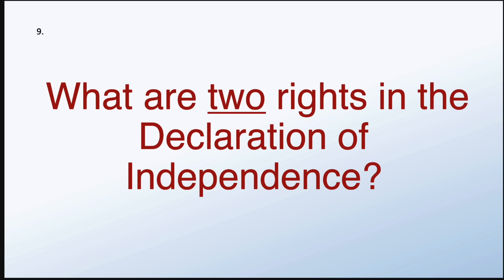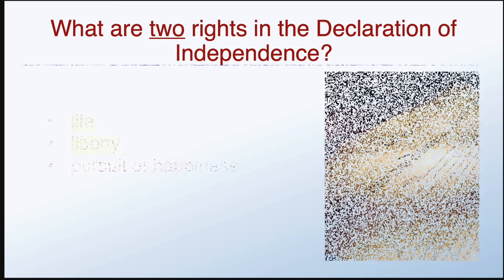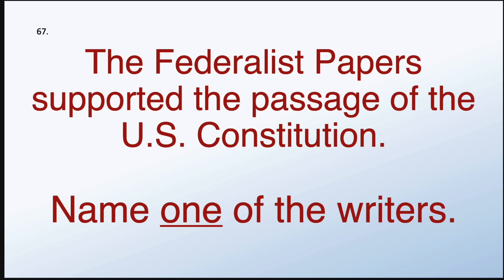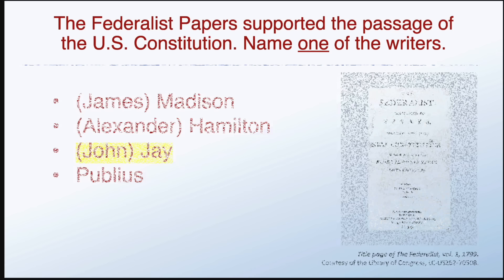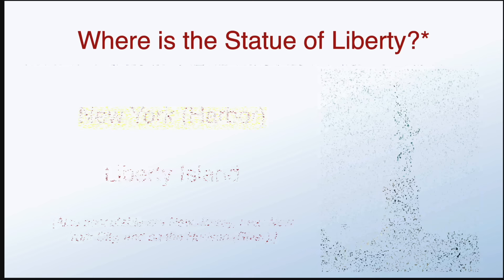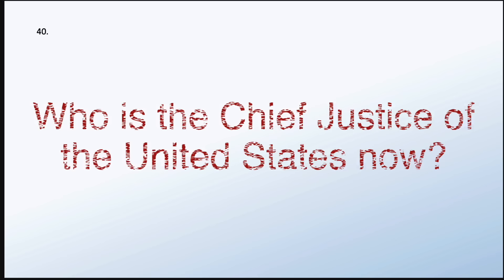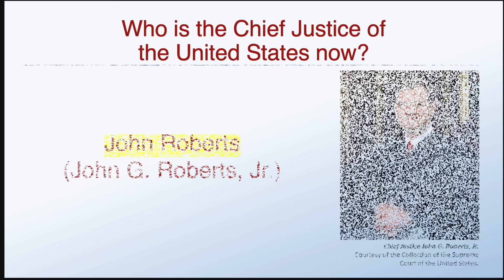What are two rights in the Declaration of Independence? Life and liberty. The Federalist Papers supported the passage of the U.S. Constitution. Name one of the writers. John Jay. Where is the Statue of Liberty? Who is the Chief Justice of the United States now? John Roberts.